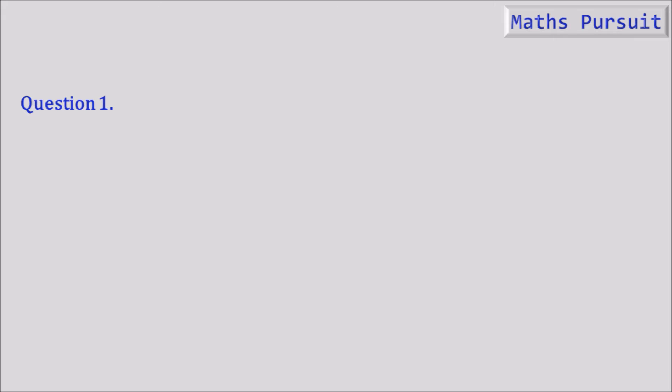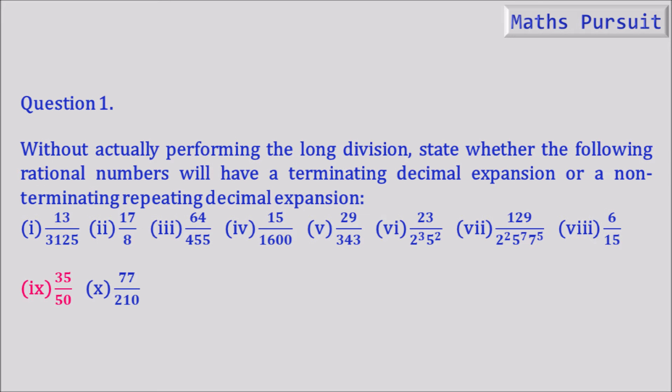Coming to question number 1, it is given like without actually performing the long division, state whether the following rational number will have a terminating decimal expansion or a non-terminating repeating decimal expansion. And the given number is 35 by 50.